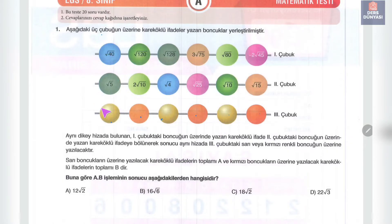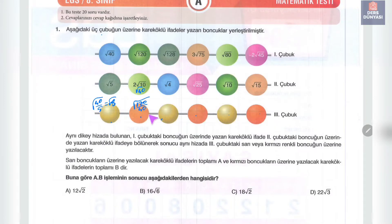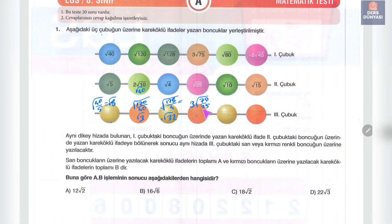Bunları bölelim. Kök içerisinde 40 bölü 5, bu kök 8 yapar. Kök içerisinde 120 bölü 40, bu kök 3 yapar. 128 bölü 4'ten kök 32 yapar. 3 kök içerisinde 75 bölü 25'ten 3, yani 3 kök 3 şeklinde söyleyebiliriz.